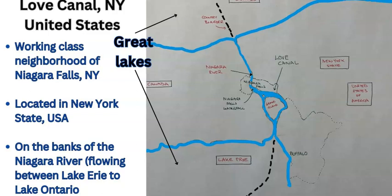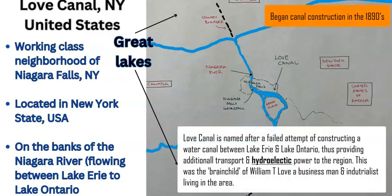Love Canal is a small neighborhood in the eastern section of Niagara Falls city limits. It was mostly middle- to low-income residents and smaller houses built around this central canal. The historical perspective begins with a gentleman called William T. Love in the 1890s — an entrepreneur and industrial man who wanted to construct a canal to redirect water from Lake Erie to Lake Ontario as an additional water source and navigation route, in addition to the Niagara River with the Falls.